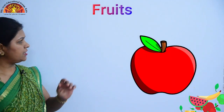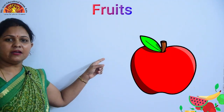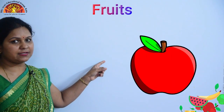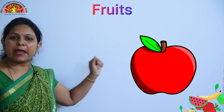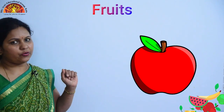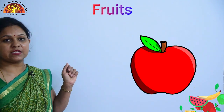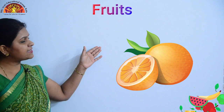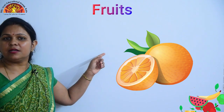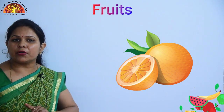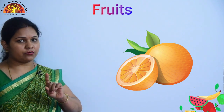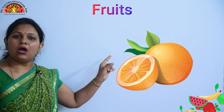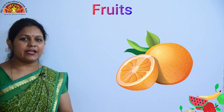Kids, this is an apple. This is an apple. Okay? See which is the next fruit? Yes, this is an orange. This is an orange.